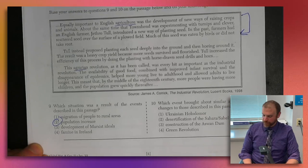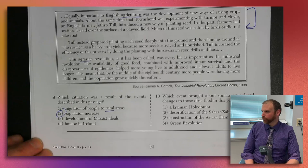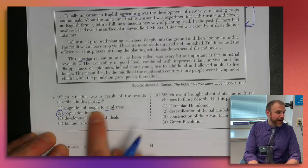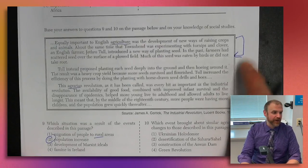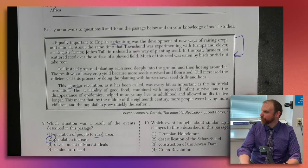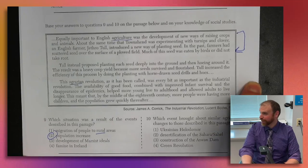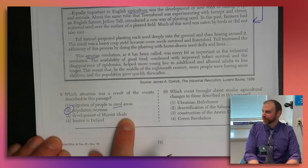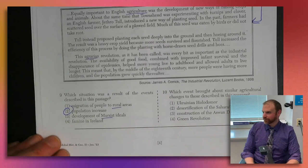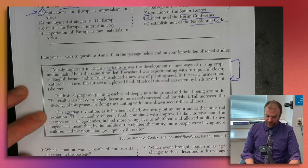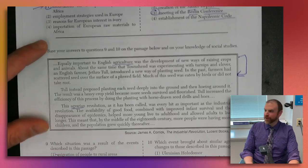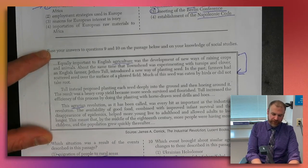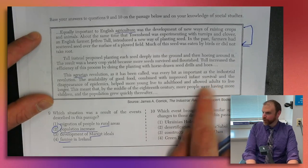Rural means countryside; urban means cities. During this time, people don't migrate to rural areas — if you have improved farm technology, a machine has replaced you, so you go to the city and try to get a factory job. Marxist ideals and communism are not in this source. Famine in Ireland — famine means starvation, which is the opposite of this source about food production and population increase. The answer is population increase.